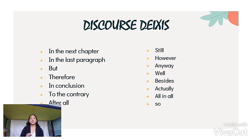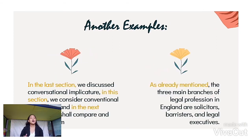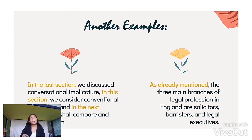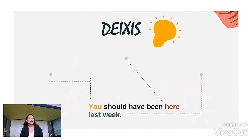Remember that the relationship between an utterance and the prior discourse is called discourse diaccess. All these words make reference to a statement or sentences that was said before. In the last section, we discussed conversational implicature. In this section, we consider conversational implicature and etc. So the yellow-colored words or phrases are what we call discourse diaccess. For example, as already mentioned — the three main branches of the legal profession in England are solicitators and etc. — the phrase as already mentioned is also an example of a discourse diaccess.